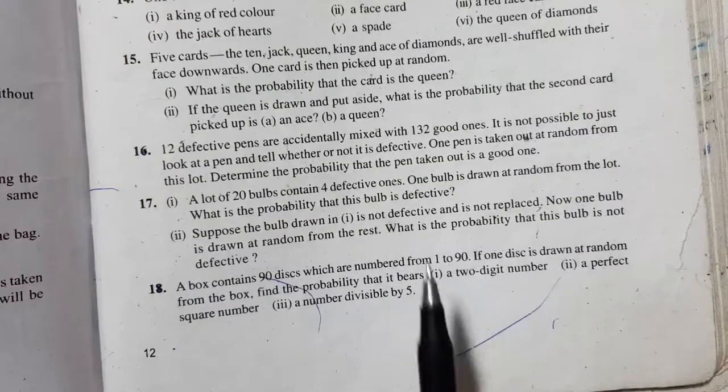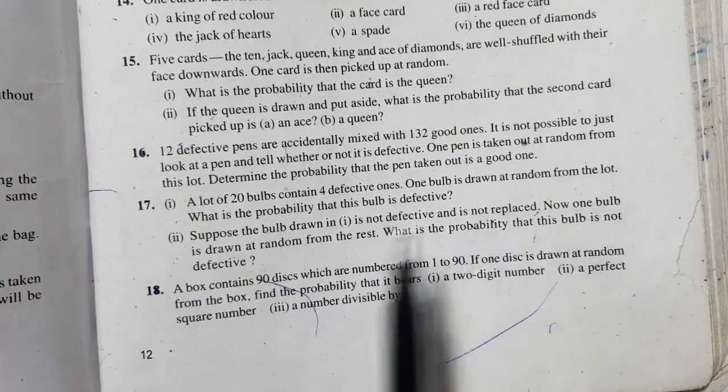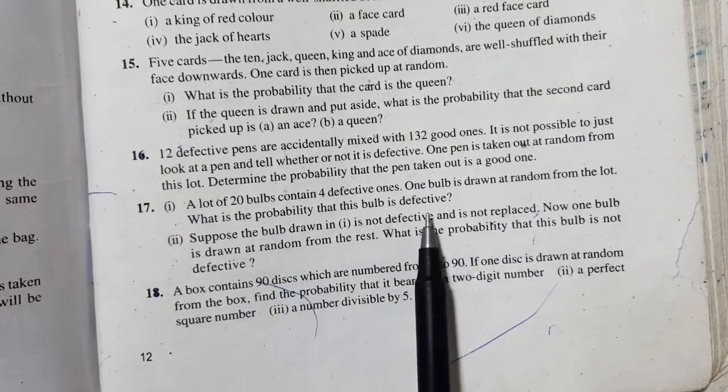The question is, a lot of 20 bulbs contain 4 defective ones. One bulb is drawn at random from the lot. What is the probability that this bulb is defective?